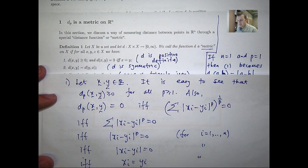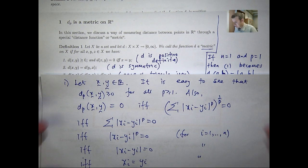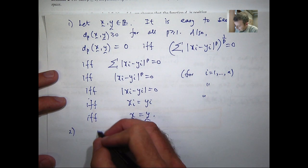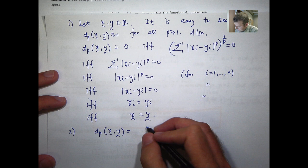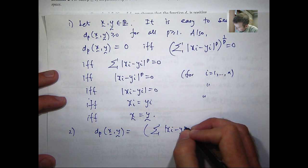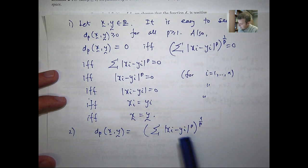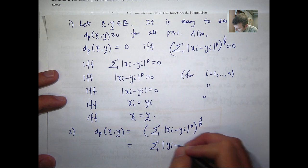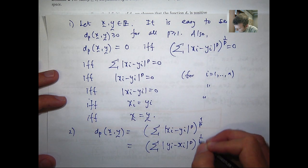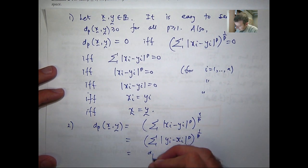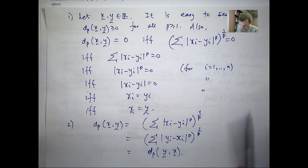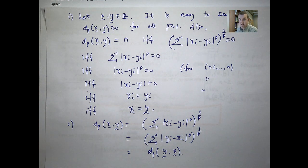The next part is showing that property two holds — that d sub p is symmetric. This is again pretty straightforward, just a little bit of algebra. We can simply swap the terms within the absolute value sign without changing anything, and what we get is just d sub p of (y, x). So d sub p is symmetric. This is very basic algebra, but I'm including it as a sketch since this is an elementary presentation.